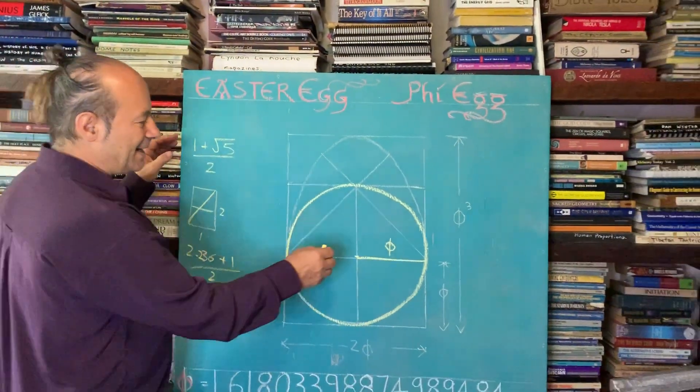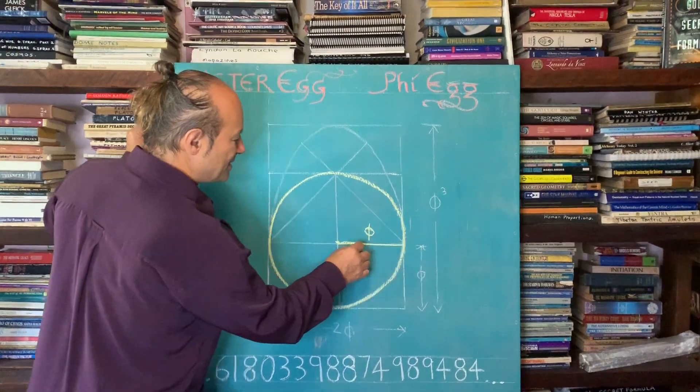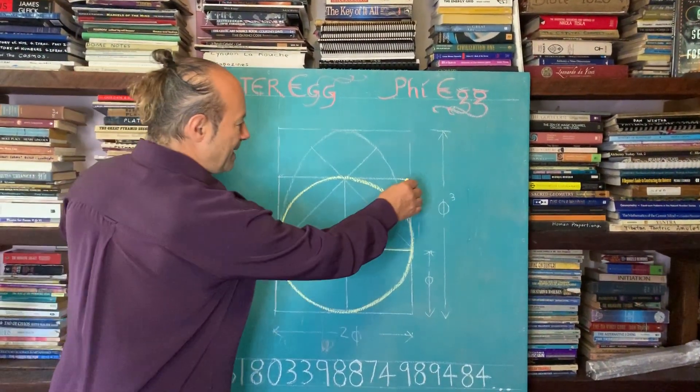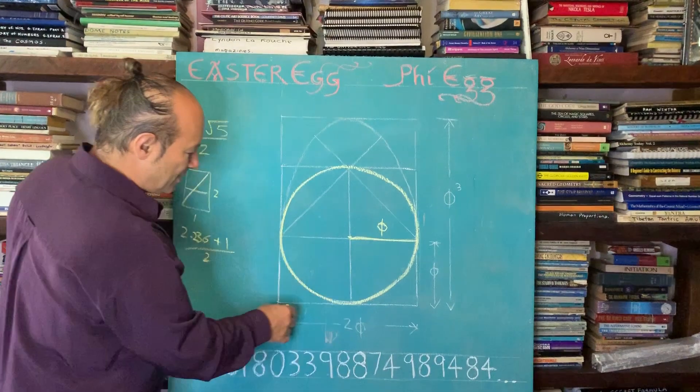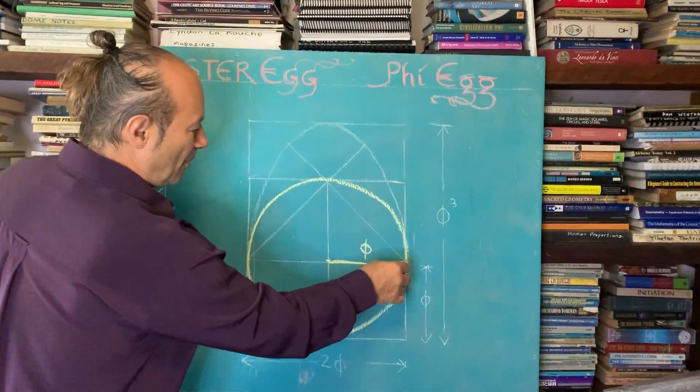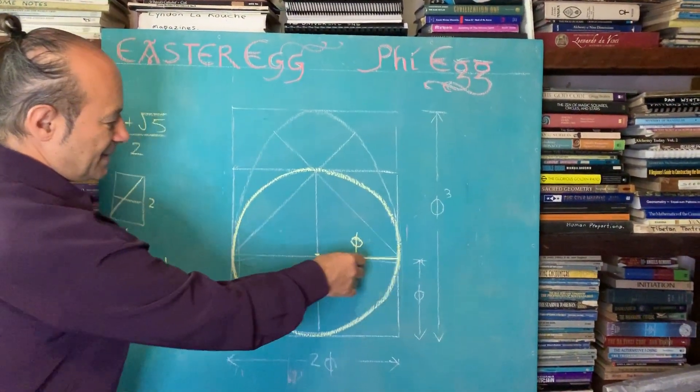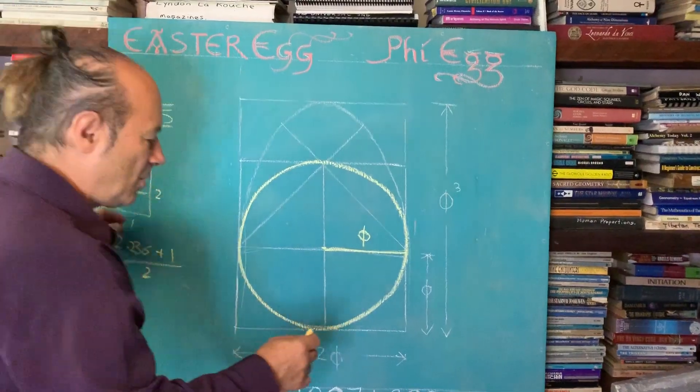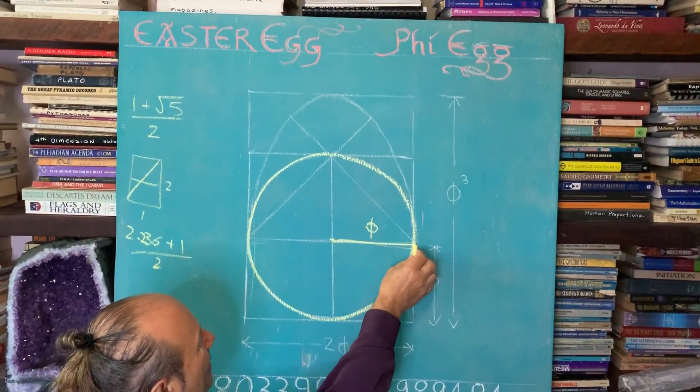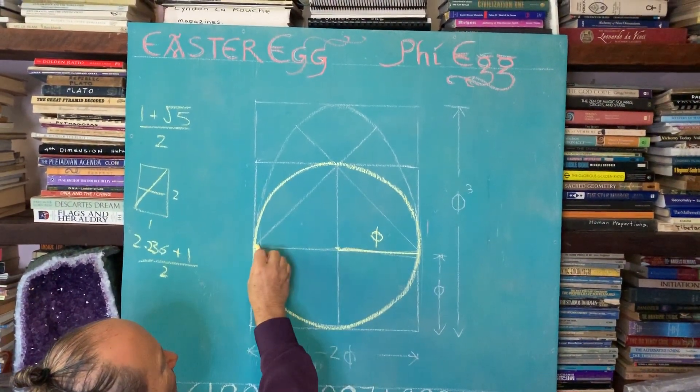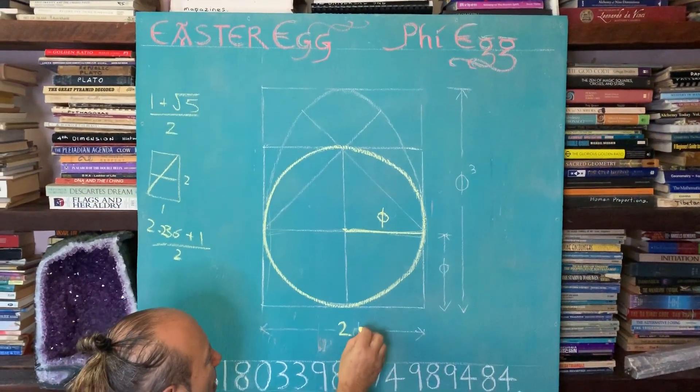So by setting our circle to Phi, we know that this is 1.618. So that means the square around it also, that means the distance or the diameter, if we were to look at this whole distance here, we'll call that 2 Phi. Because if that's one Phi and another Phi makes the diameter, we'll call that 2 Phi.